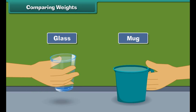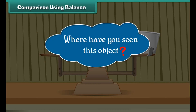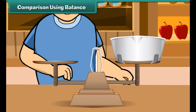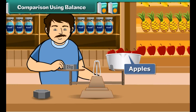A heavier object has more weight than a lighter object. Let us understand it with the help of an example. Fill a glass with water and fill a mug with water. Try to lift both. Which is easier to lift? Quite obviously, the glass filled with water — it is lighter than the mug filled with water. Therefore, objects that are easy to lift are lighter than objects that are difficult to lift.